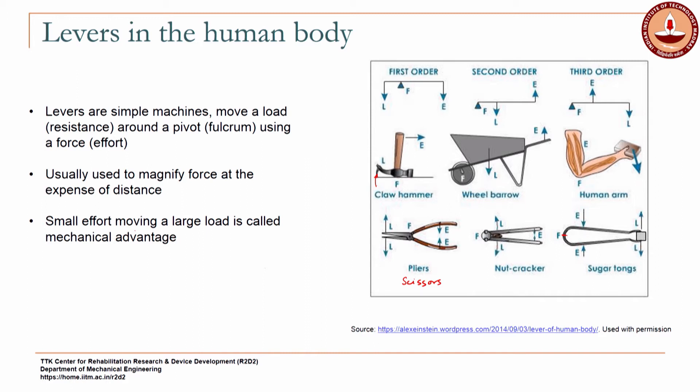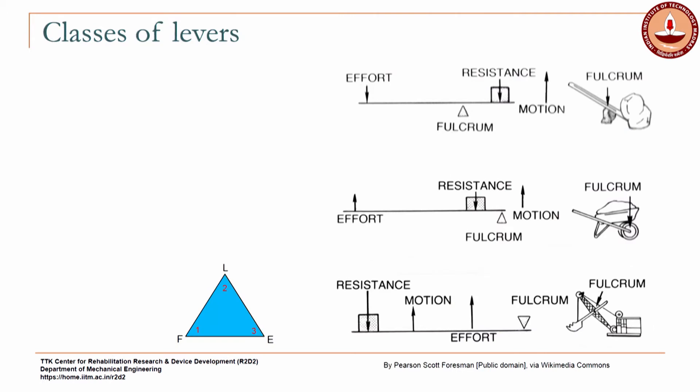One way to remember the classes of levers is by remembering a triangle diagram. If you draw a triangle and mark the vertices 1, 2, 3 — and correspondingly F, L, E — that is a mnemonic to remember which class is which. The relative locations of where the fulcrum is placed with respect to the load and the effort determines the class of the lever.